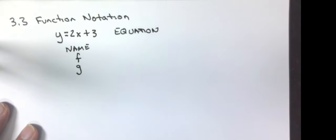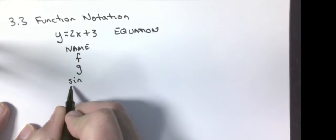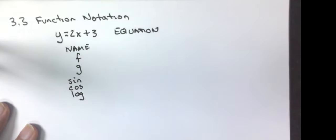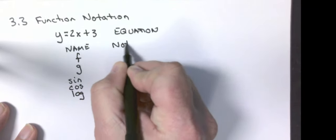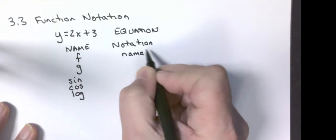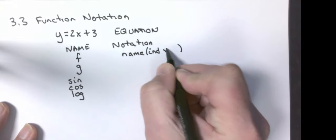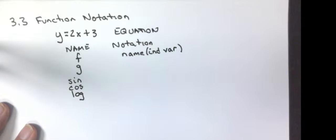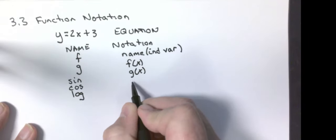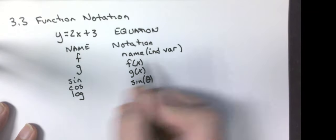Later on in your high school math career, you're going to learn about other functions that have names, and that would be like the sine function, the cosine function, the logarithm function. So they have names. The notation we use would be the name with parentheses and the independent variable. For example, I can do f of x, I can do g of x, I can do sine of theta. This is just telling me what the variable is in there.